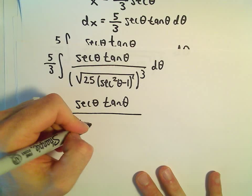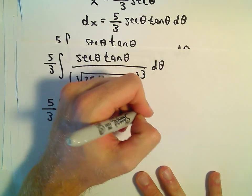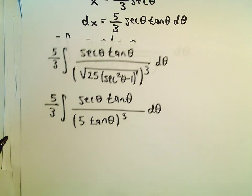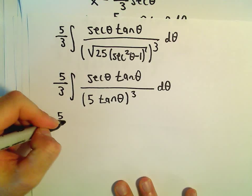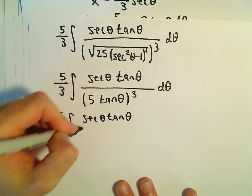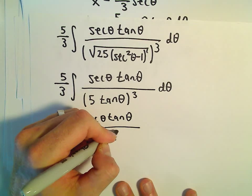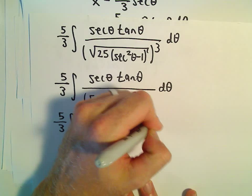But when we take the square root of it, well, we're just left with tangent of theta. But again, all of this is being cubed. So let's see, we have 5 thirds times secant theta tangent theta. We would have 5 cubed and then tangent cubed theta d theta.